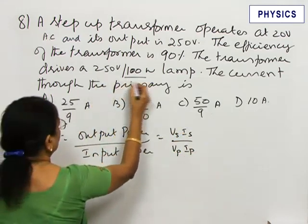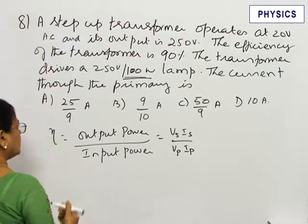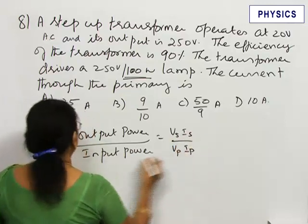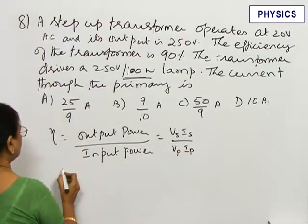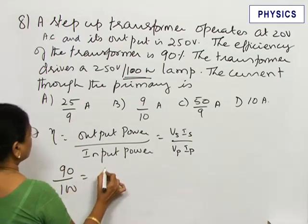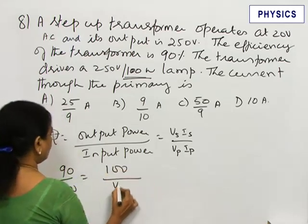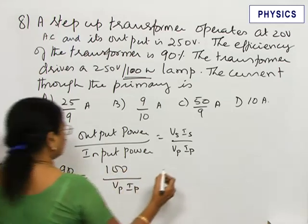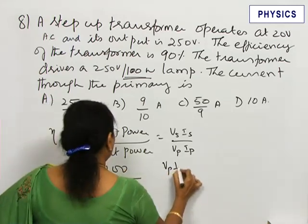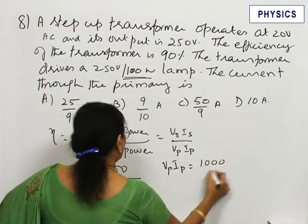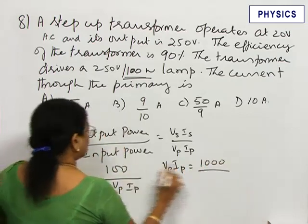Now, the transformer is used to drive a 100 watt lamp. That means its output power is 100 watts. Efficiency is 90 percent. So, 90 divided by 100 equals 100 divided by Vp Ip. Let us solve this. What do you get? Input power Vp Ip equals 1000 divided by 9.